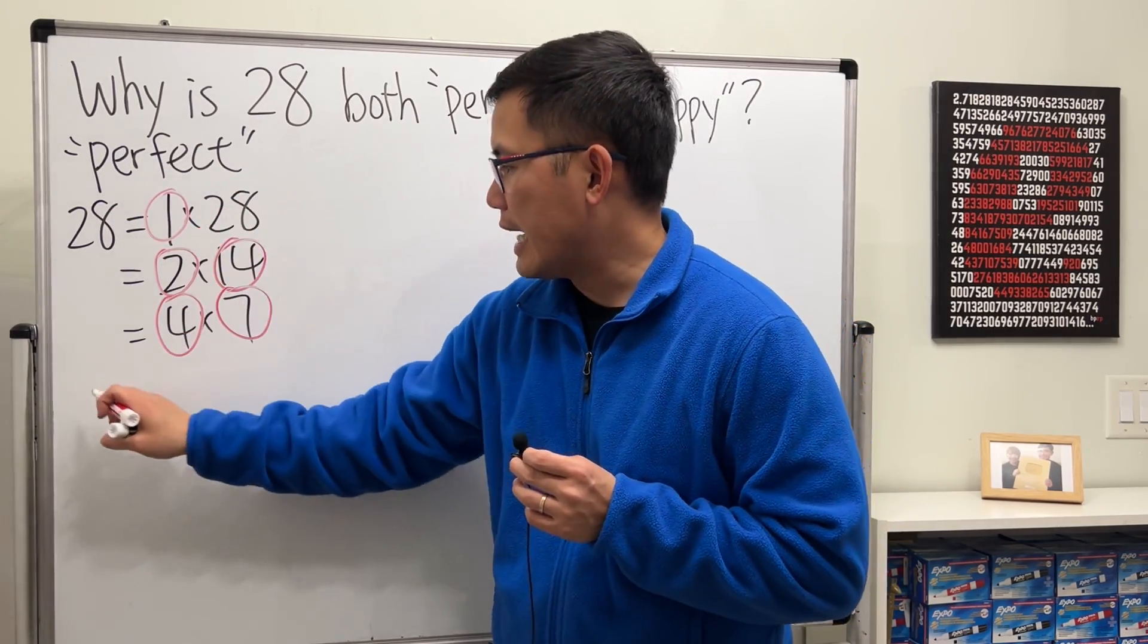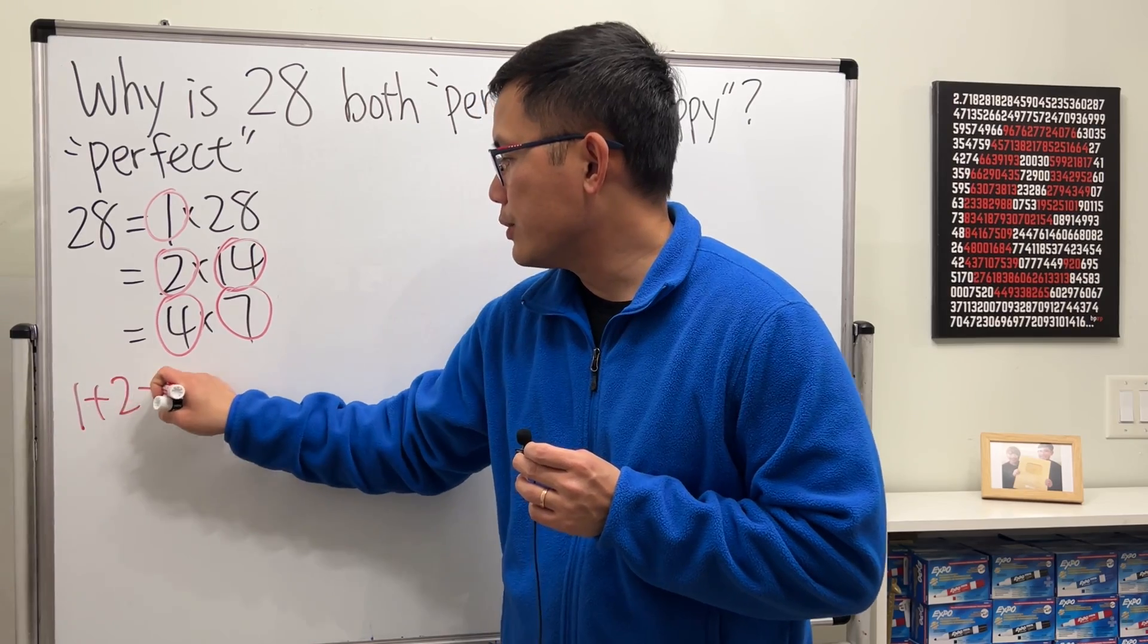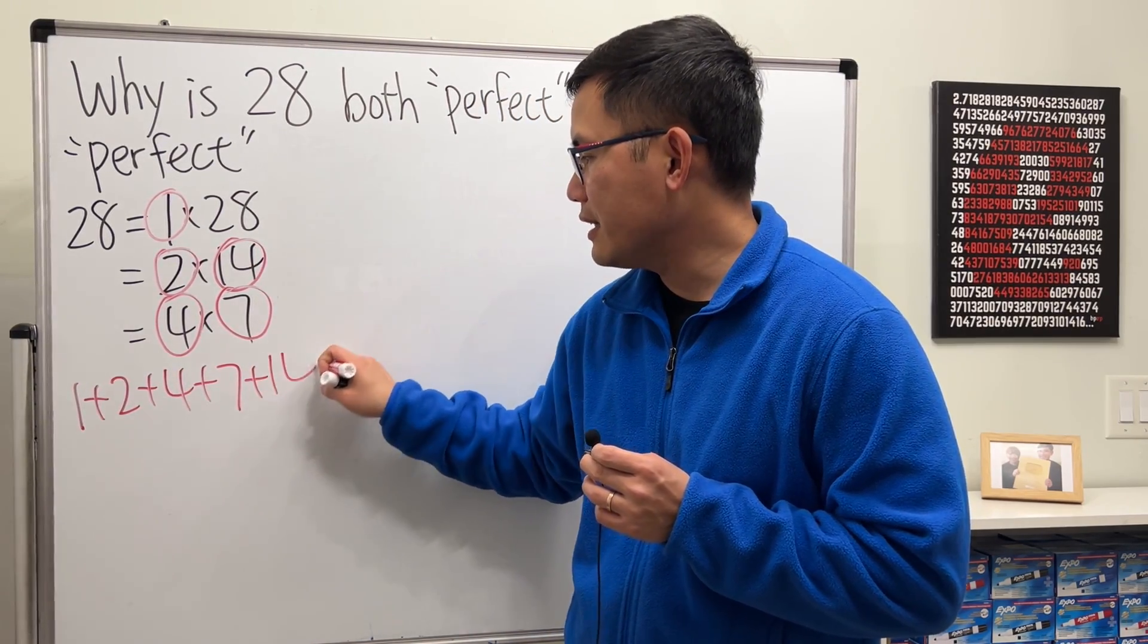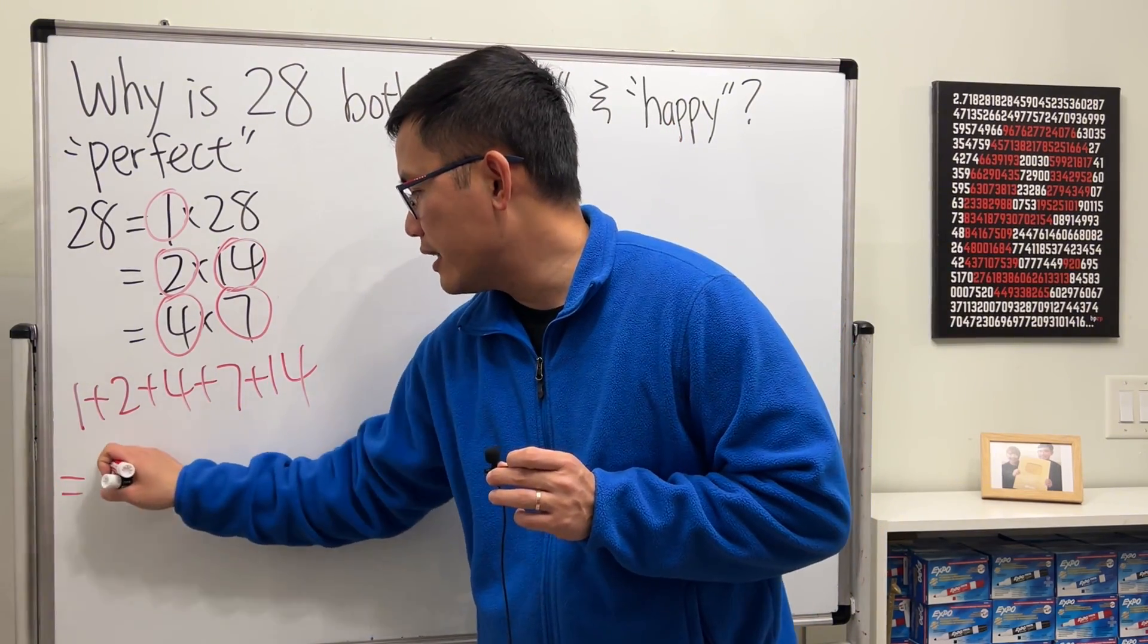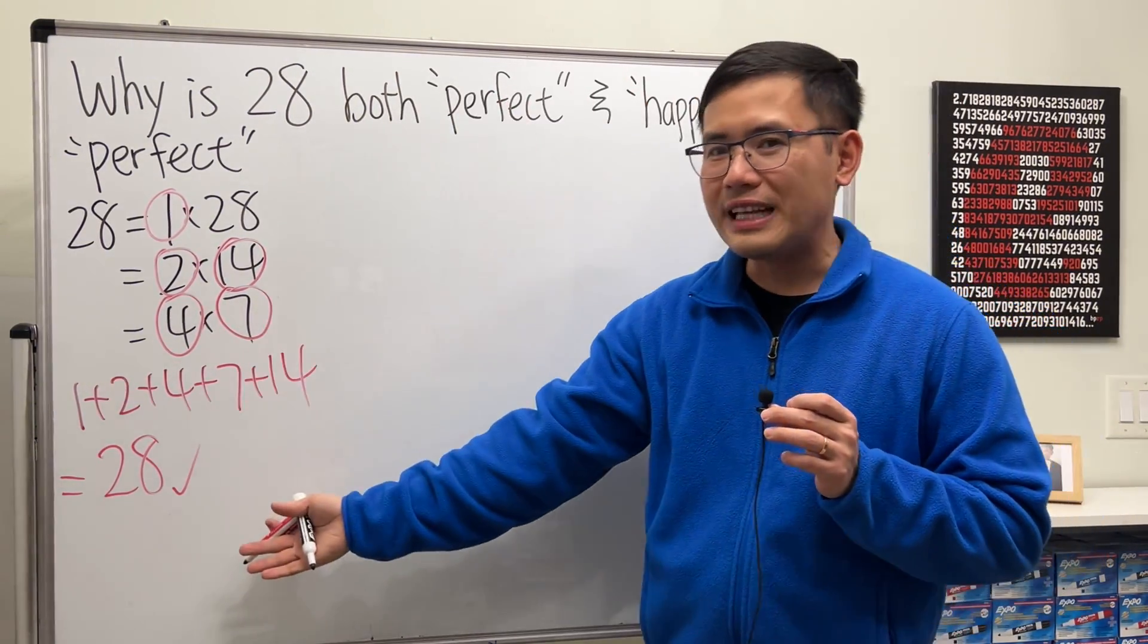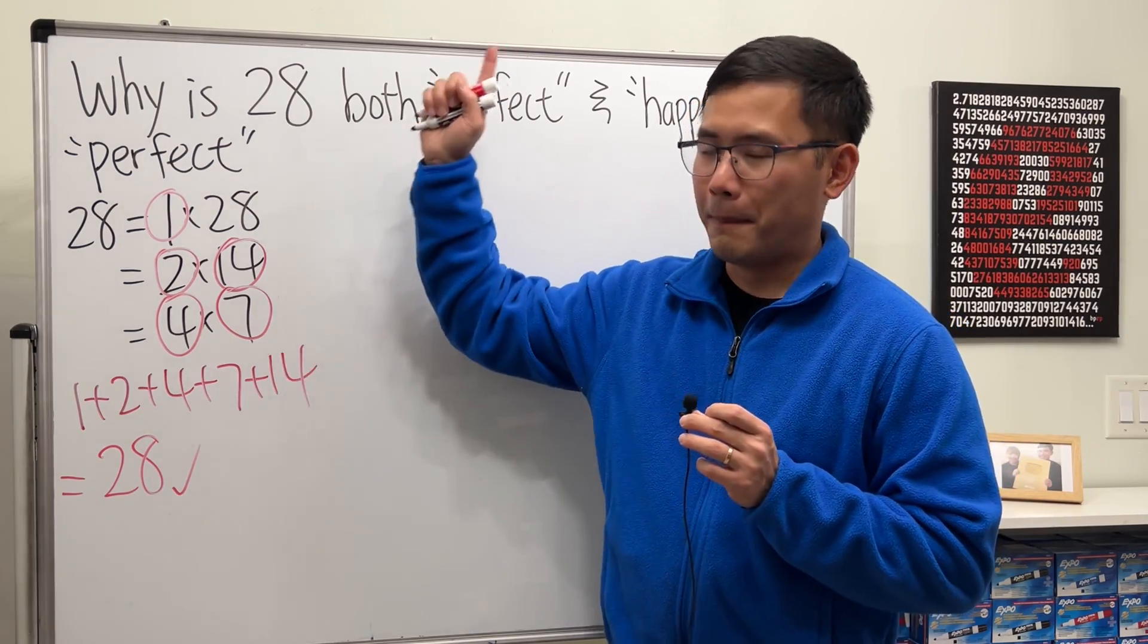Now, let's go ahead and add them up. 1 plus 2 plus 4 plus 7 plus 14. Guess what? Yes, we are going to get the number 28 back. So whenever this happens, that makes the number perfect.